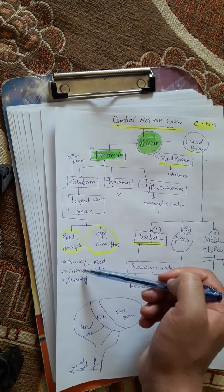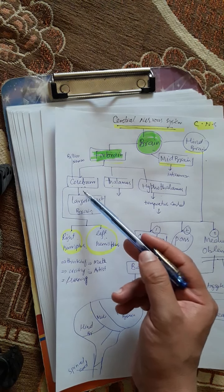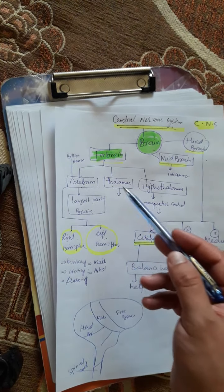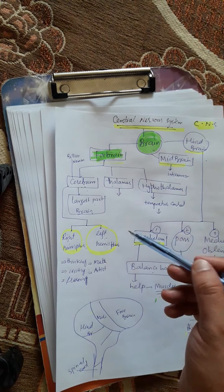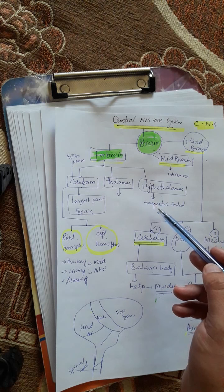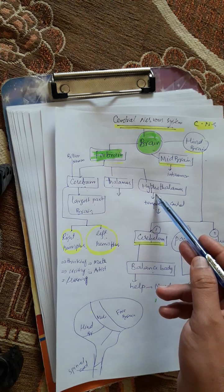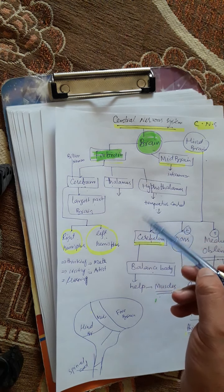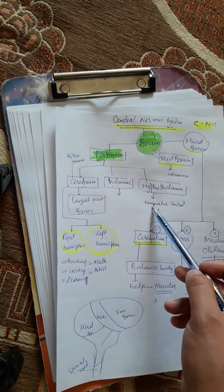You can also check the book for more details. The cerebrum handles thinking, mathematics, art, learning, and writing — all of these are performed by the cerebrum. Thalamus and hypothalamus are also parts of the forebrain. The hypothalamus is the temperature control room. For example, when someone has a very high fever, it is the hypothalamus that is affected — so hypothalamus controls temperature.